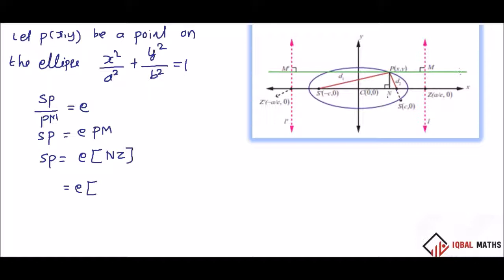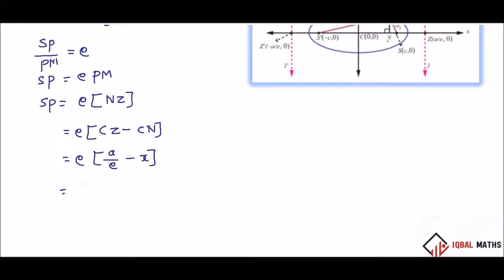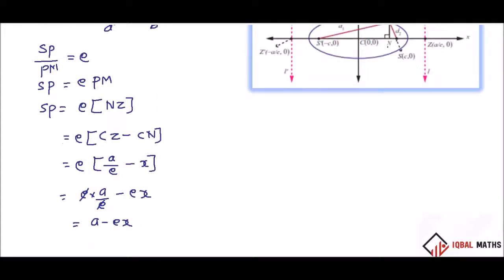So a by e. The x-axis y-zero is a by e, zero. CN is a distance. CZ minus CN. CZ is ae, a by e. CN is x multiplied by e. So e cancels, giving a minus ex — that's SP, the first focal distance.